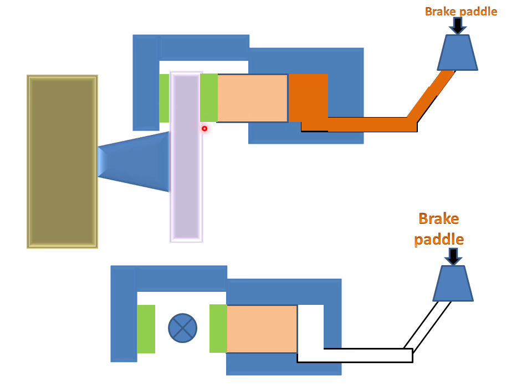Now we will see this animation. In this we will easily understand when we press the brake paddle, fluid will come through these pipes.